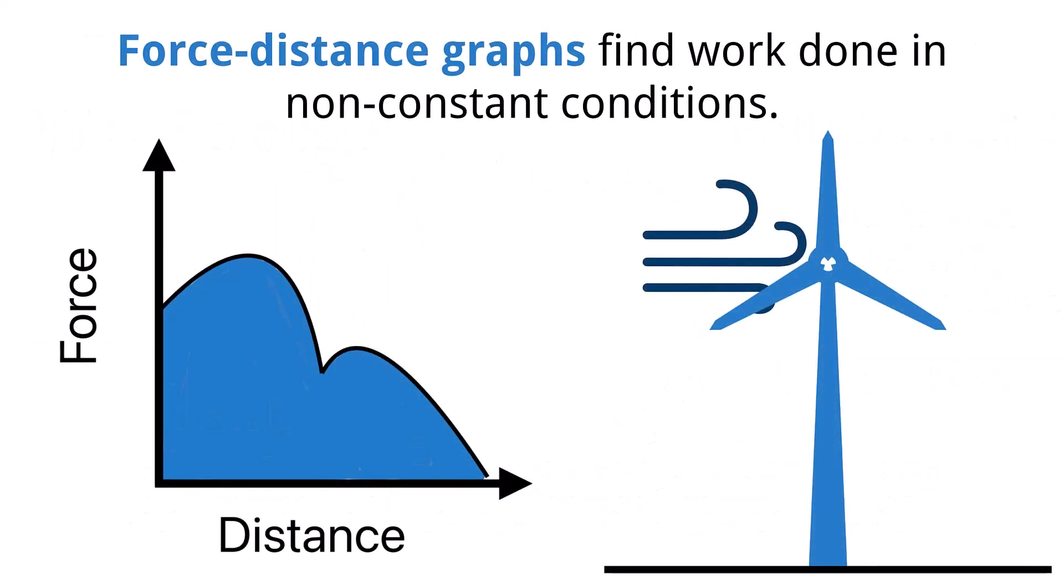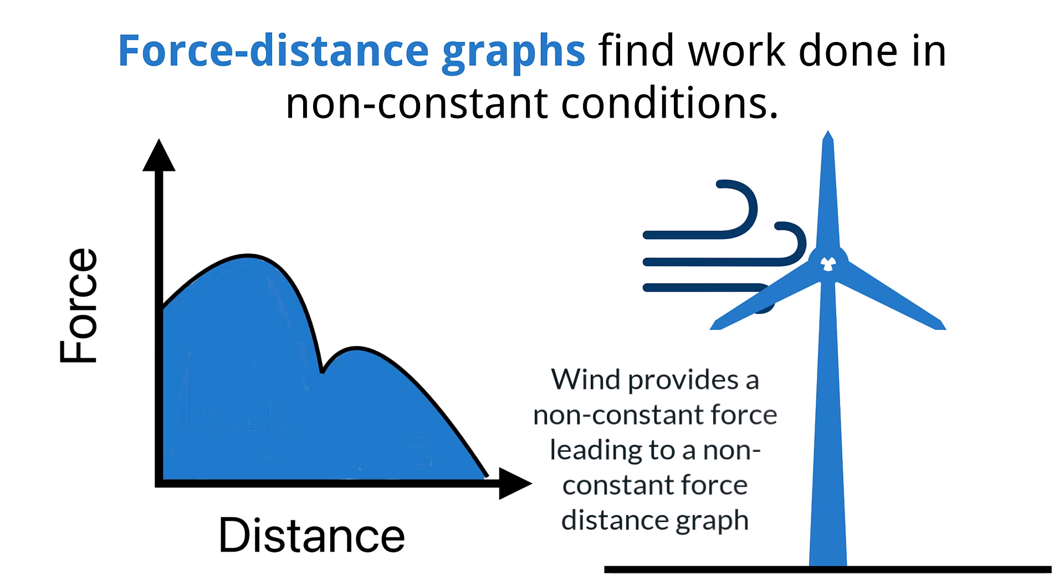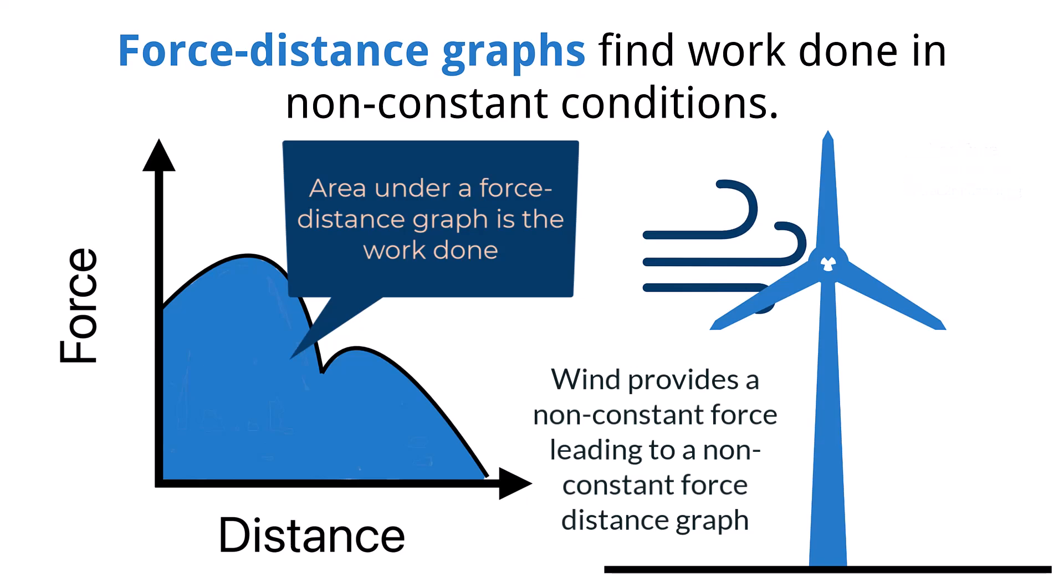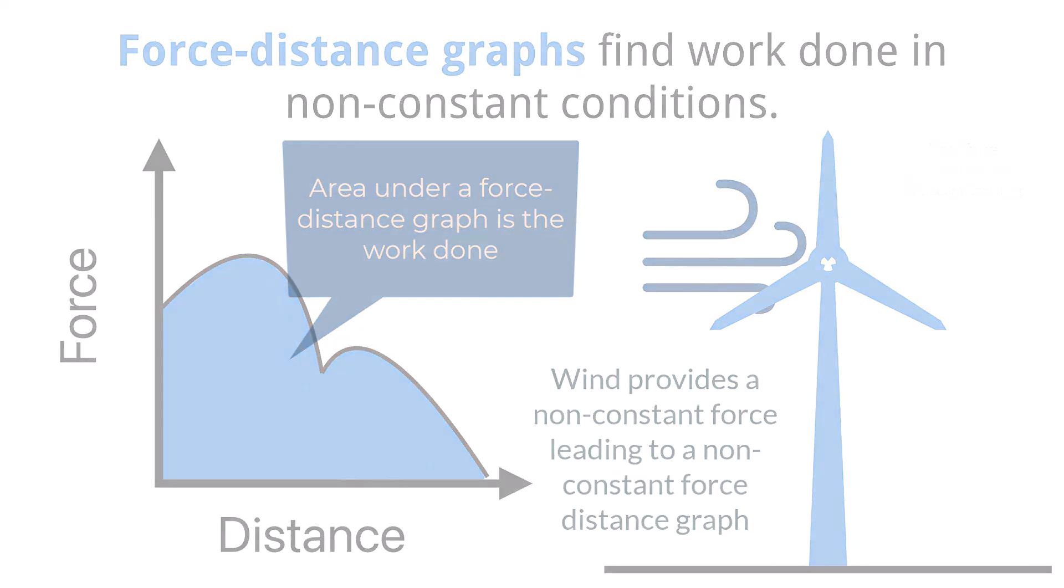Not all conditions lead to a constant force being applied. For instance, in the case of a windmill, the force from the air is not always constant, therefore the amount of work done on the windmill is not always constant. A force distance graph can be used to estimate the work done by finding the area under the curve. This may involve using geometric equations like the areas of rectangles and triangles, or making counting estimates for force distance graphs that have curves.